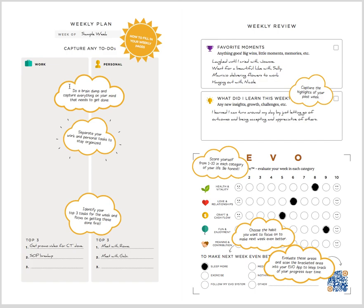Next, we will do a complete brain dump and get everything that you have to do for this week on paper. Break them down into categories of work and personal to-dos. Once you're complete, prioritize that list with the top three items and enter them below. That's it. You're set for the week.